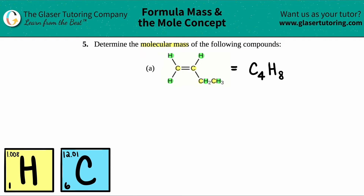With any molecular mass calculation, we just list out all the different elements — in this case just carbon and hydrogen — and state how many of each we have. That was actually the hard part, and we just did that work: we have four carbons and eight hydrogens. Now all we have to do is multiply these numbers by the masses on the periodic table.